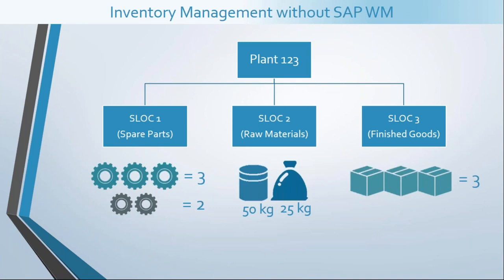When we do not have SAP WM, we can check stock of a particular material at the plant level, and the smallest level we can drill down to is the storage location. In this example, we can check how many spare parts are in storage location 1, how much raw material is in storage location 2, and how many finished goods are in storage location 3 — but we cannot go any further using only inventory management.